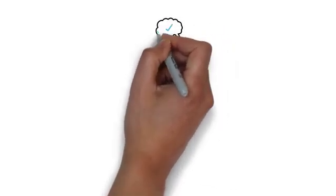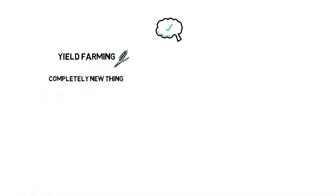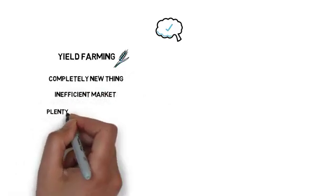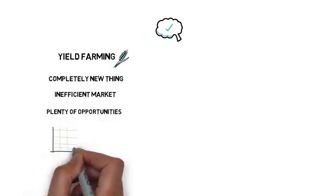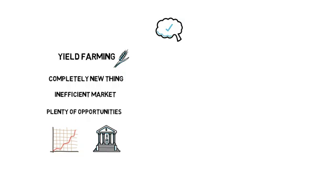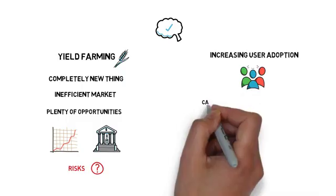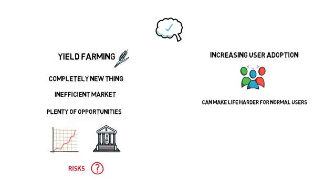Yield farming is a completely new thing and it's far from being a fully efficient market, so there are plenty of opportunities that can bring substantially better returns on capital than what we can find in traditional finance or even centralized crypto finance. This comes with certain risks, some of which we may not even be aware of yet. Although yield farming has good potential for increasing user adoption and attracting more people to DeFi protocols, it can also make life harder for normal users — for example, users may see borrow rates on Compound changing dramatically without being aware of the intricacies of different COMP token distribution strategies.